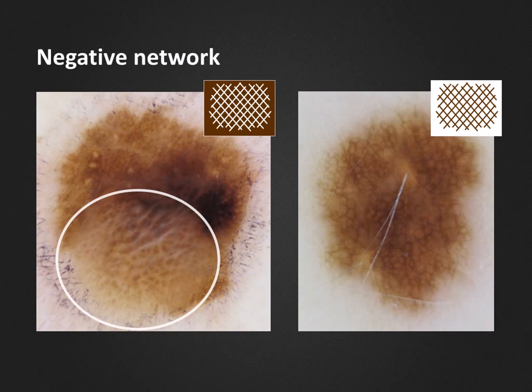In the lesion shown here to the right, we can clearly recognize the typical pigment network which characterizes junction nevi. The network is composed of fine brown lines with pale or very light colored holes. However, in some melanoma in situ lesions and thin invasive melanomas, we can find a structure known as the negative network. This is the opposite of the pigment network, so instead we find white or pale lines surrounding brown clods or globules.